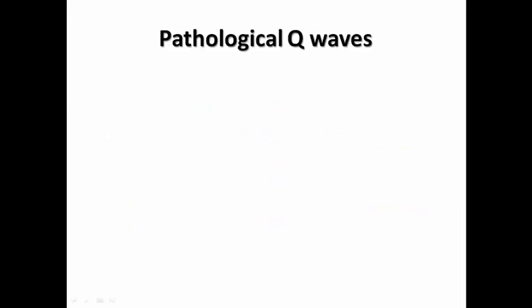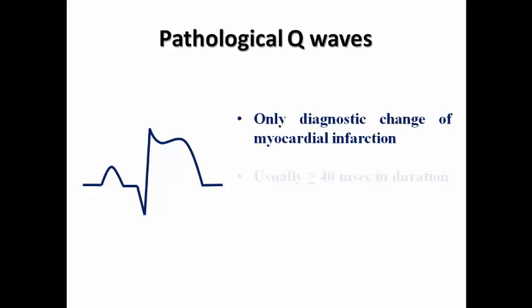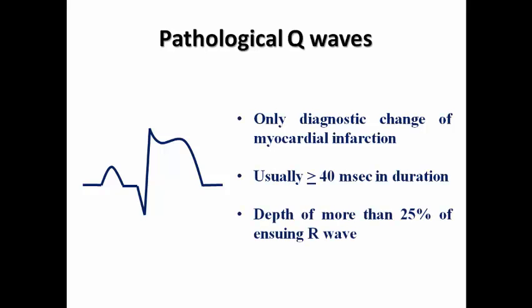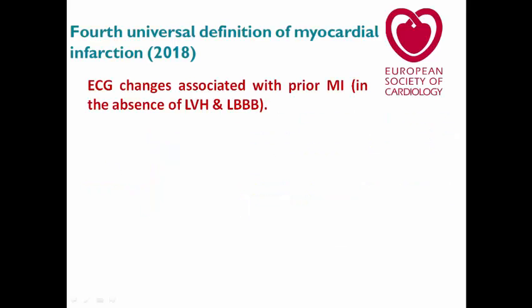Pathological Q-waves are considered the only ECG change of myocardial infarction, because ST elevation may occur in the context of reversible myocardial ischemia, as in coronary vasospasm, as well as in STEMI. But pathological Q-waves are usually associated with myocardial infarction. Usually they exceed 40 ms duration and their depth is more than 25% of the ensuing R-wave.